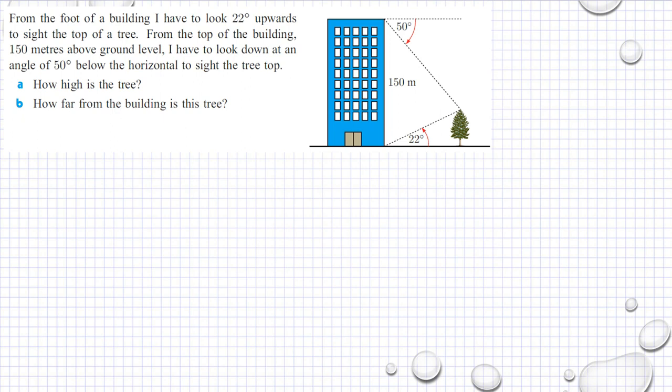How high is the tree if we call this X? And how far from the building is the tree if we call this Y? We have A and B. So if we know that this is 90 degrees, that means this one is 68 degrees. And if we know that that is also 90 degrees, then this is 40 degrees.